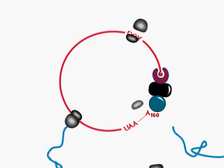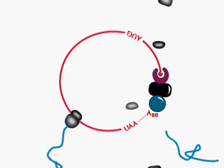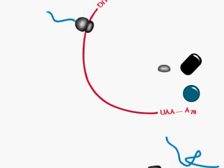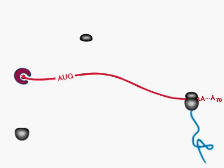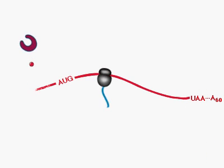Translation begins when the 60S subunit binds to form the ribosome and ends when the ribosome encounters a stop codon. As translation continues, the poly-A tail shortens. Below a critical length, the mRNA loses its 5' cap and is degraded.